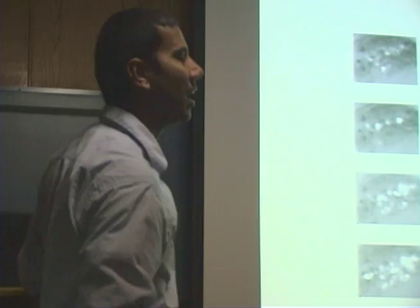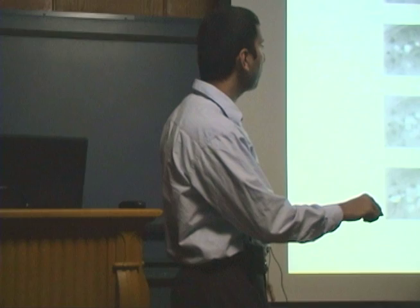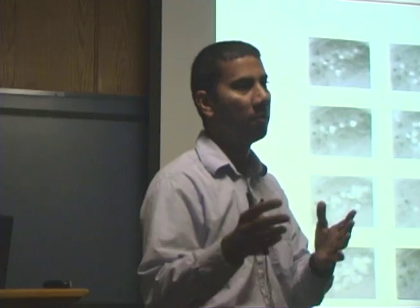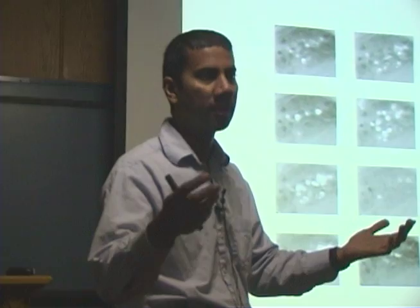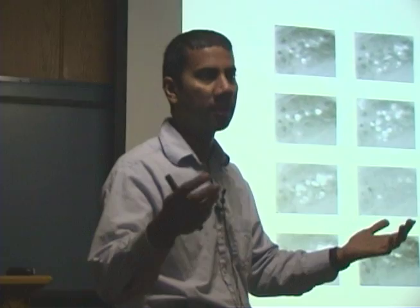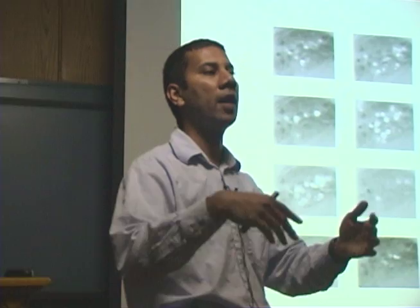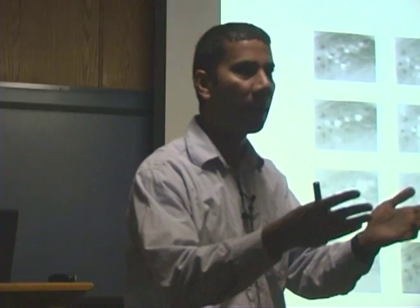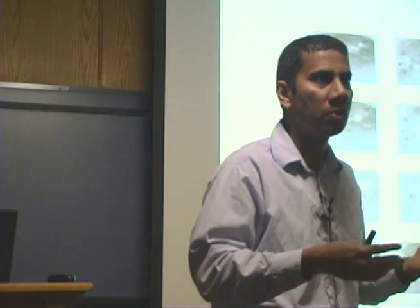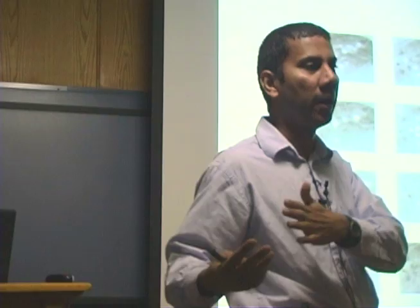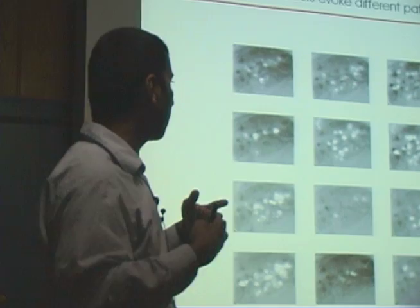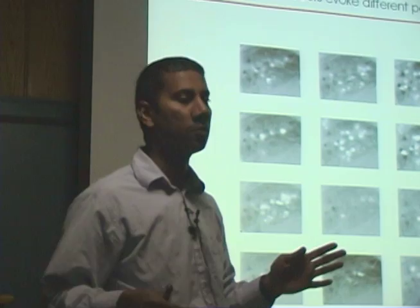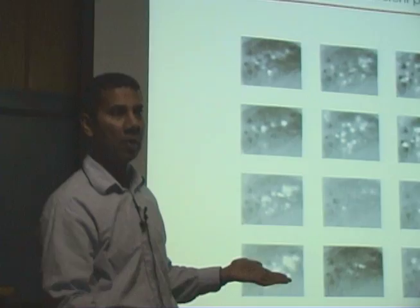We can now ask: say one odor is activating just one specific glomerulus. Let's say we raise a mouse in an environment that has that odor all the time — so that particular set of neurons is constantly being activated. Will those synapses change in any way? Odors are actually the best example of adaptation — you go into a room and something smells funny, but after some time you adapt to it. If you keep an odor present long-term, will this set of synapses change its properties to no longer sense it because it's always there and irrelevant? We don't know the answer, but those are the kinds of experiments we'd like to do.